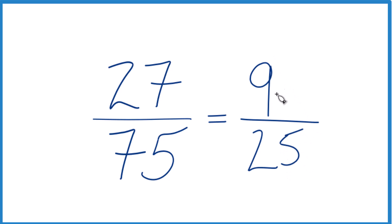The only common factor here is 1, so we've simplified the fraction 27/75 down to 9 over 25. If you divide 27 by 75 or 9 by 25, you'll get the same answer—they're equivalent.